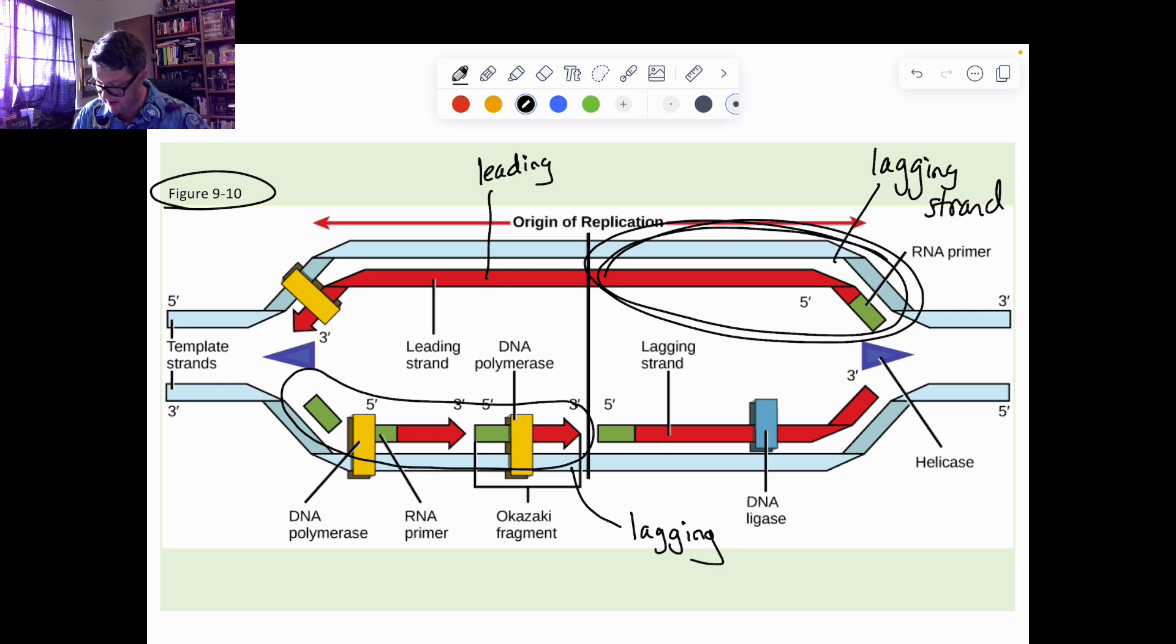And the thing about leading and lagging strands is I only apply the terms like leading and lagging when I look at a particular replication fork. So for the fork that's on the left, the top strand is leading, the bottom strand is lagging.